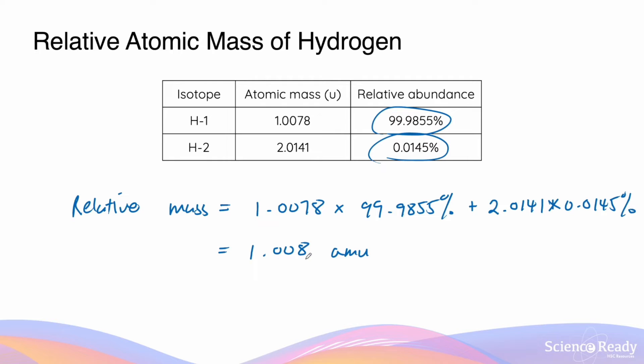Now you can see this number is really close to the atomic mass of H-1. And it makes sense, because the H-1 isotope makes up the majority of all the isotopes of hydrogen. So logically, the relative atomic mass of hydrogen should be really close to the atomic mass of the hydrogen-1 isotope.